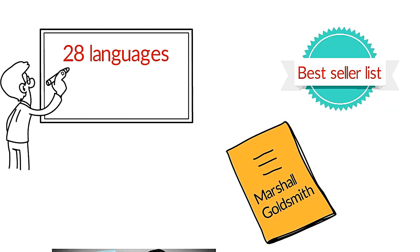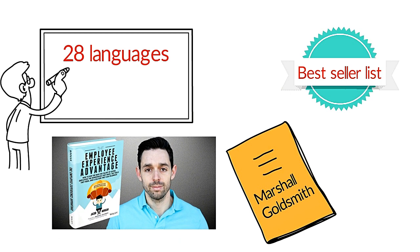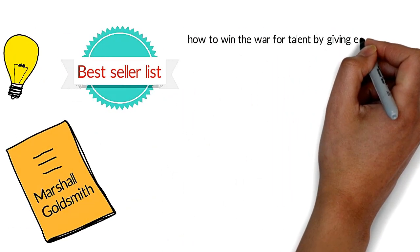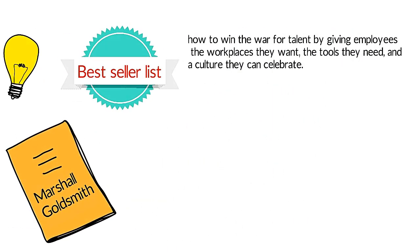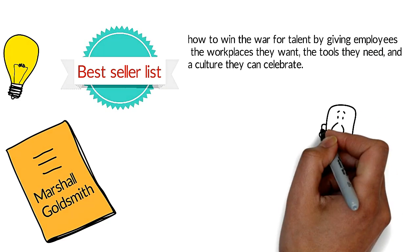In this book, bestselling author Jacob Morgan follows up from his previous books, The Future of Work and The Collaborative Organization, and shares his advice on how to win the war for talent by giving employees the workplaces they want, the tools they need, and a culture they can celebrate.